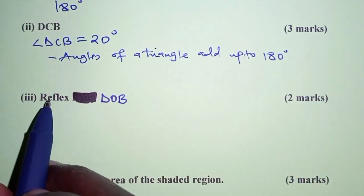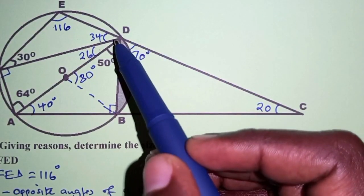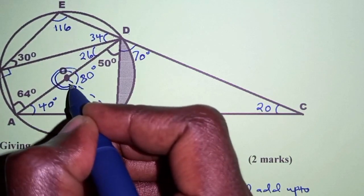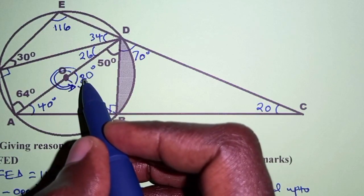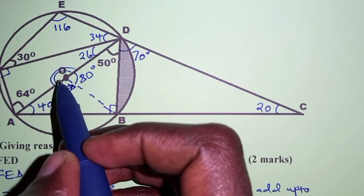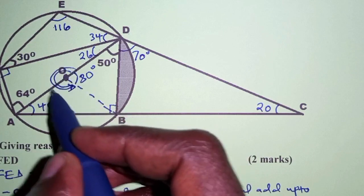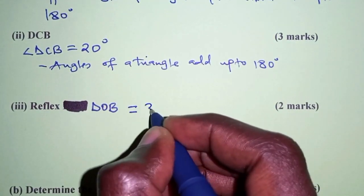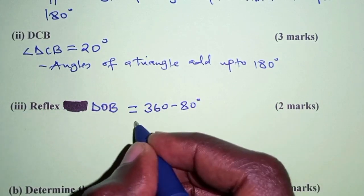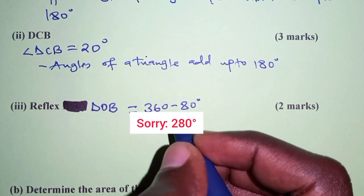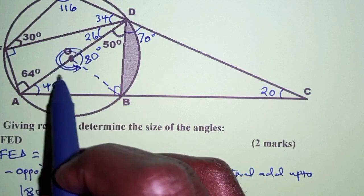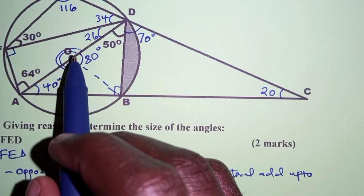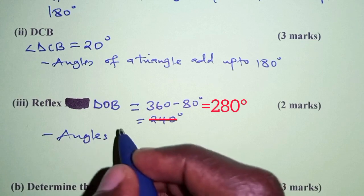For part 3, the reflex angle DOB. In the diagram, angle DOB is 80 degrees, so the reflex angle is on the other side. We obtain it by subtracting 80 from 360, because angles about a point add up to 360 degrees. So the reflex angle DOB is 360 minus 80, which is 280 degrees.